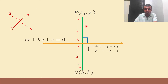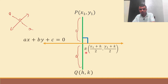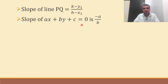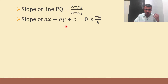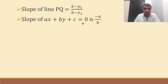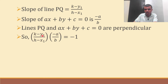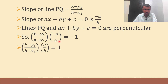Slope of PQ is y2 minus y1 by x2 minus x1, which is k minus y1 by h minus x1. Slope of ax + by + c = 0 is minus a by b. Now since these two lines are perpendicular, the product of their slopes is minus one. So the minus signs cancel, giving: k minus y1 by h minus x1 multiplied by a by b equals one.